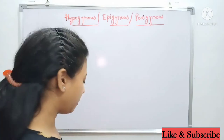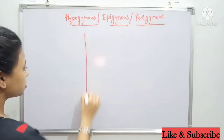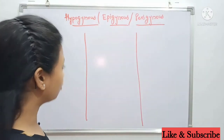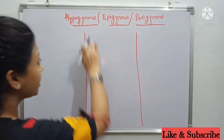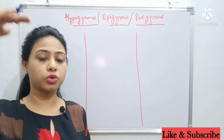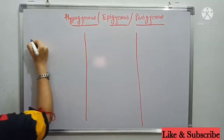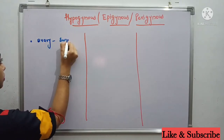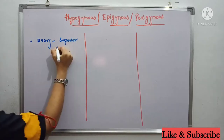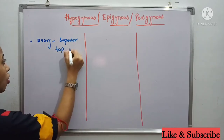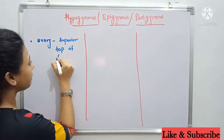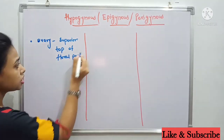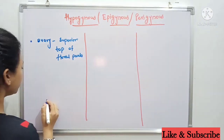Let's take them individually. I am explaining this in a tabular form. So, hypogynous — what is 'hypo'? Hypo means below. What happens is the ovary is superior. The ovary is on top of all other floral appendages, or you can say floral parts. We will understand it through the diagram.